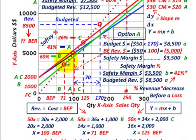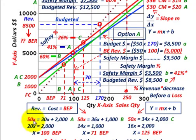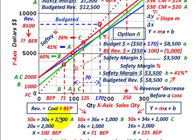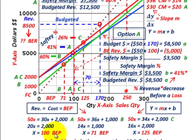Let's calculate these break-even points, which is where your revenues equal your costs, using the Y equals MX plus B formula. For option A, our revenues are 50X and our cost is 30X plus $2,000 fixed cost. Solving for X: 50X equals 30X plus 2,000; moving 30X over gives 20X equals 2,000; dividing each side by 20 gives X equals 100. So option A has a break-even quantity of 100 units of sales.